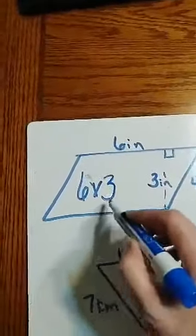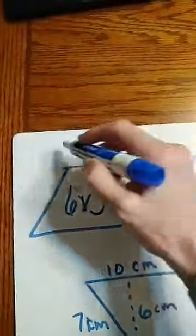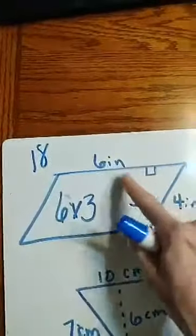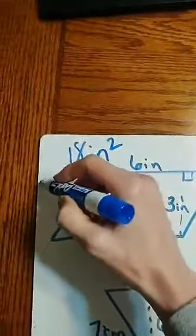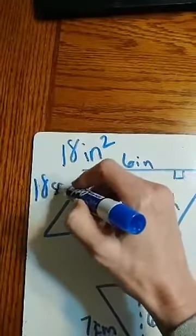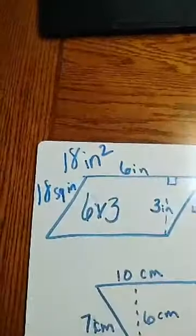So if I multiply, I get my area of this parallelogram is 18, don't forget a label, inches squared. Or another way would be 18 square inches. Either way is okay.